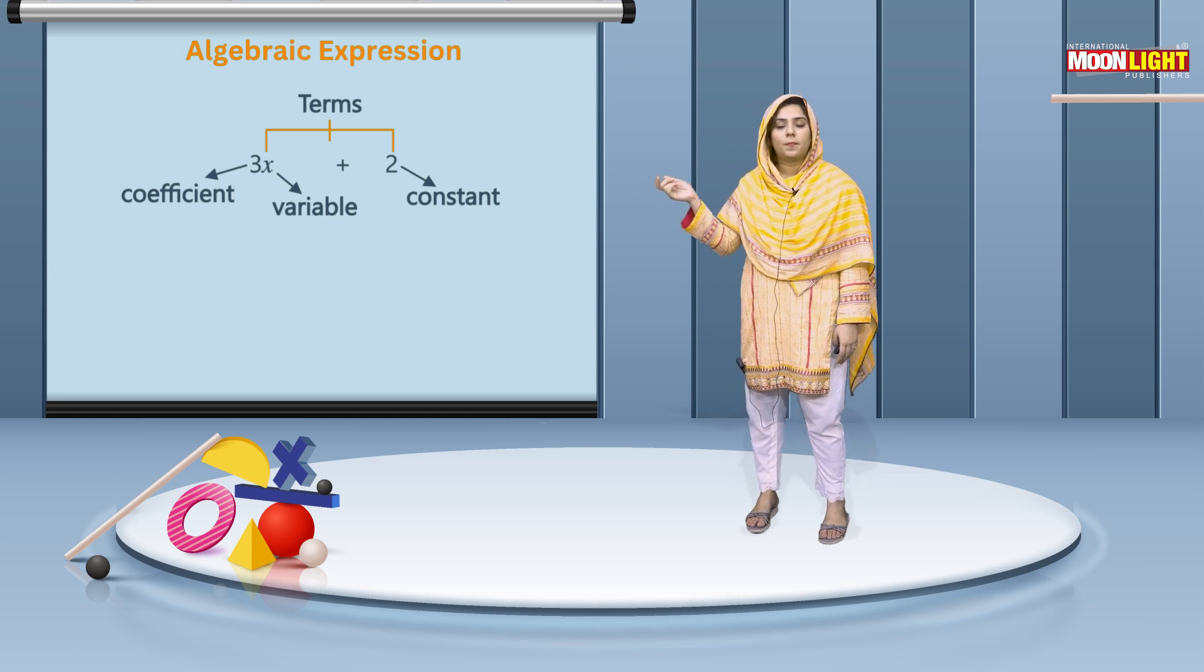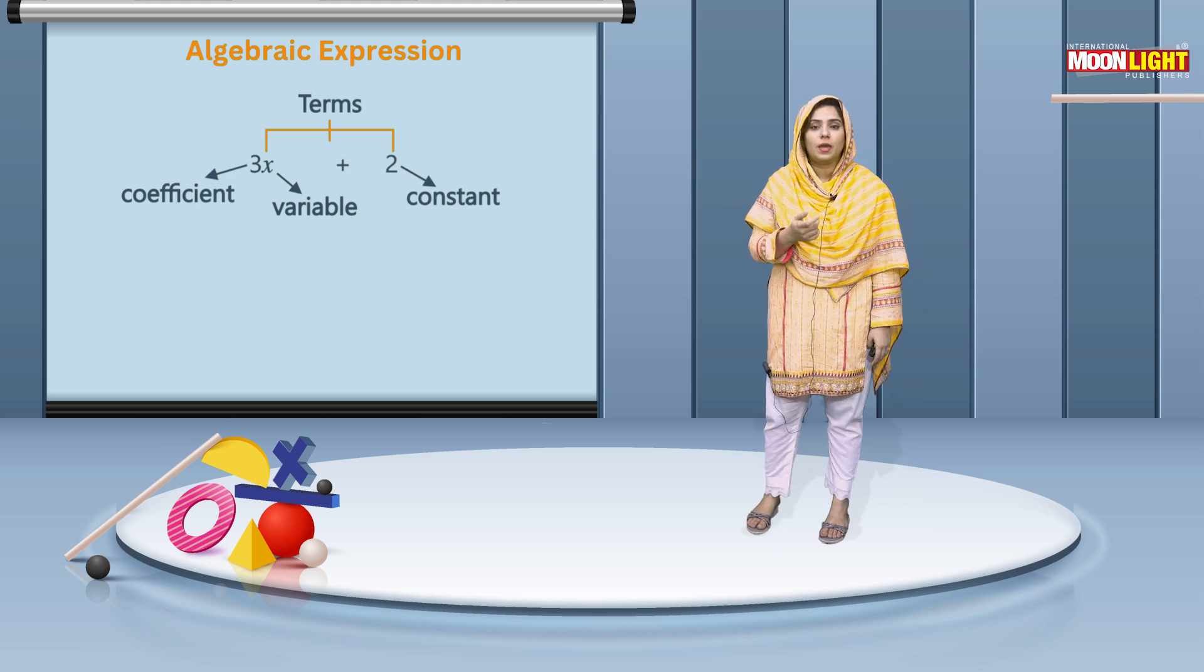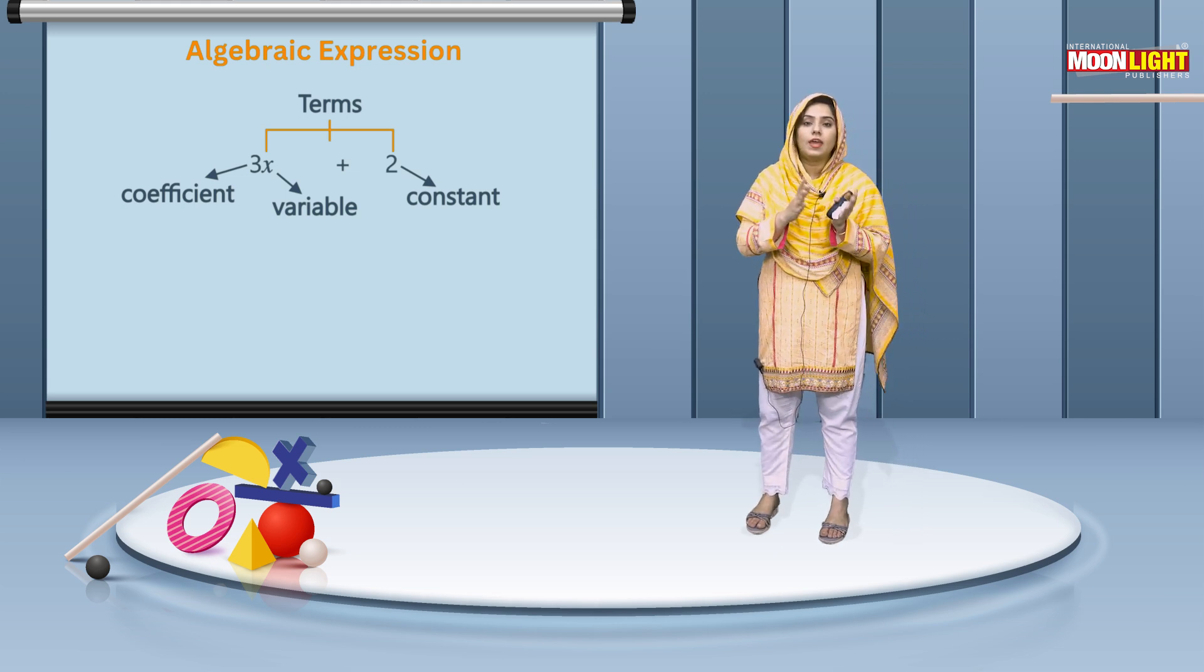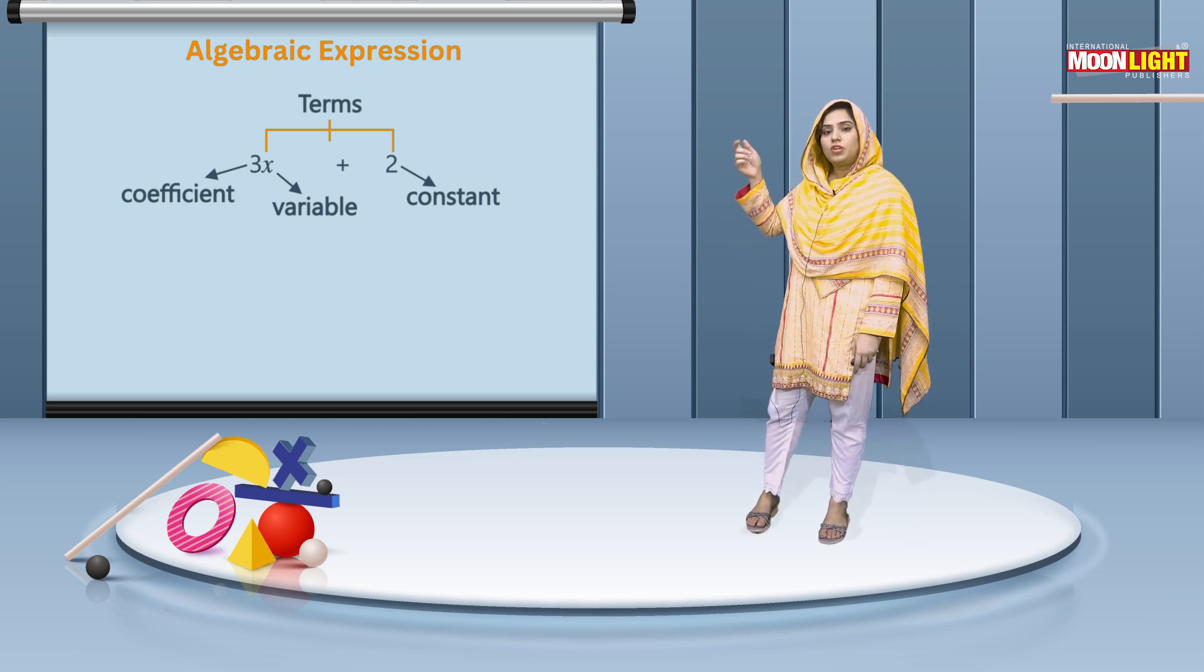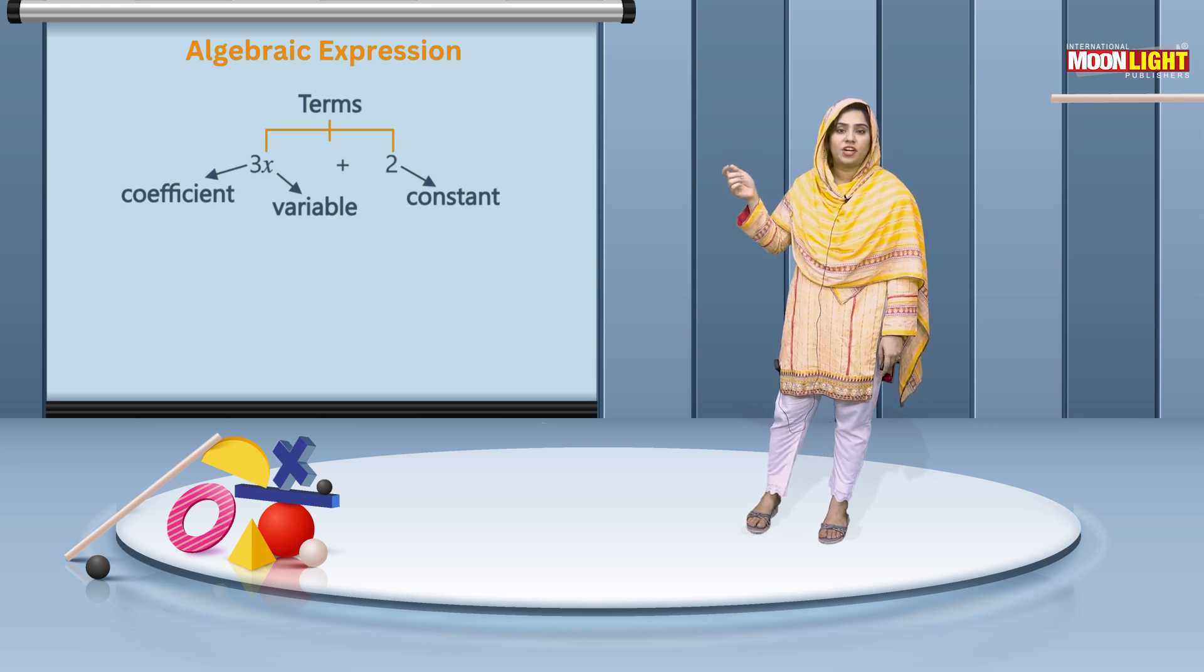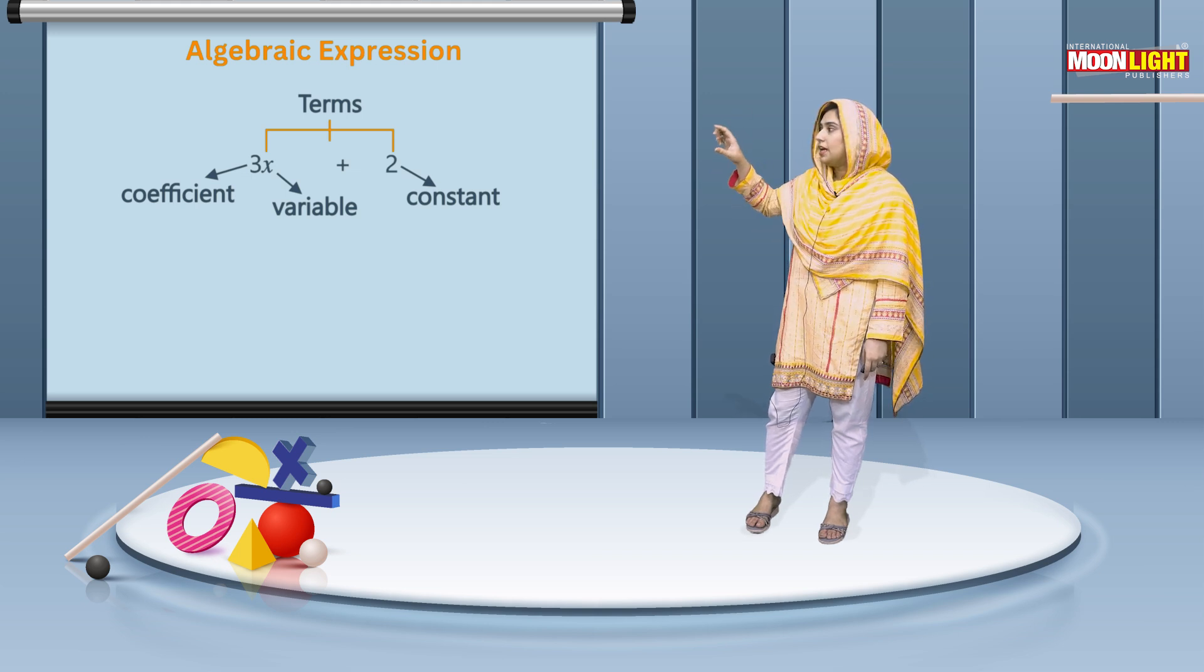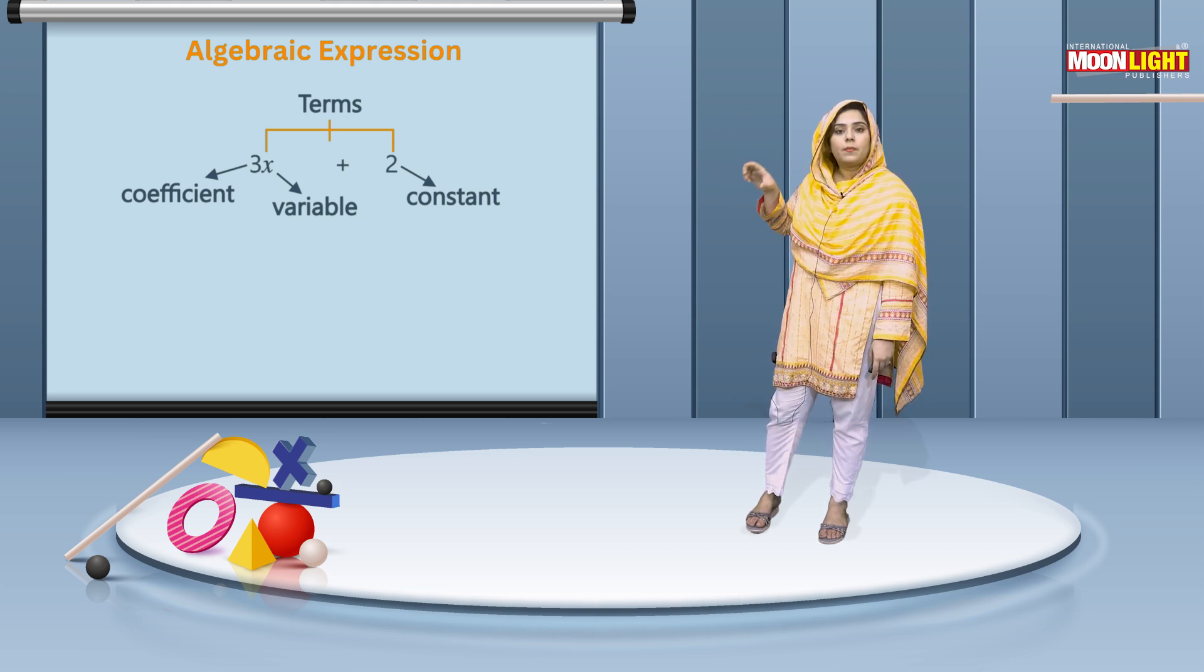If I talk about x, then x is my variable whose value will vary. And here the 3 that you see, what is 3? 3 is my coefficient. And in this, what are the terms? One term is 3x, and one term is 2.